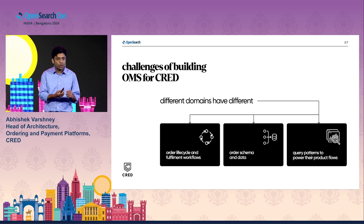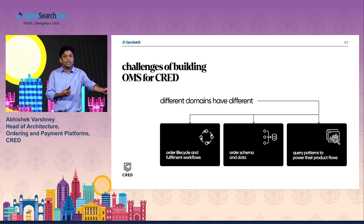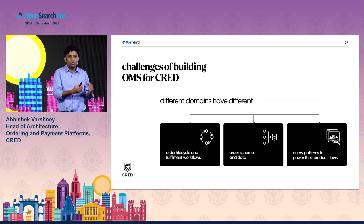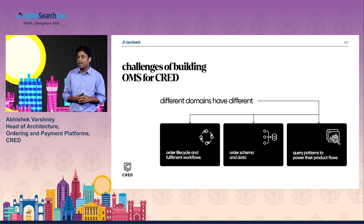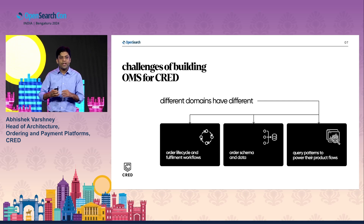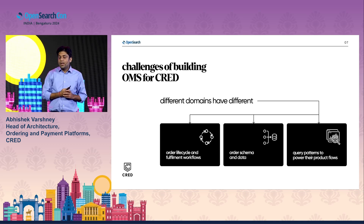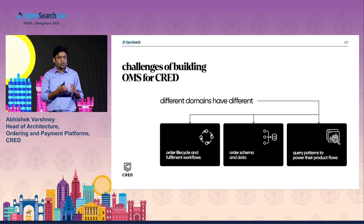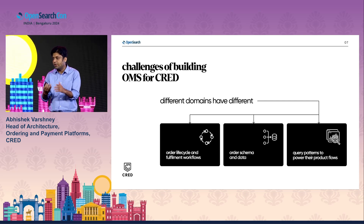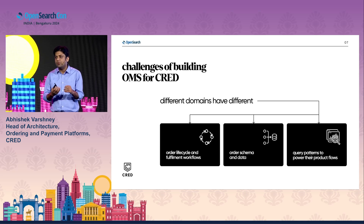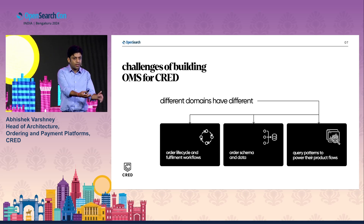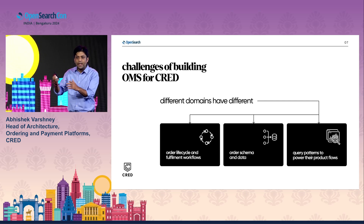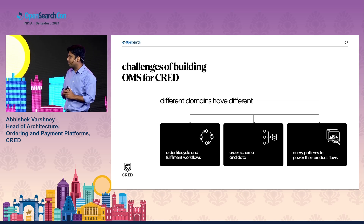For example, in case of an e-commerce order, it could be us intimating the seller first, and then once the seller approves, there is a physical delivery of the good that happens. But in case of a credit card bill payment, it could be a very different fulfillment workflow which happens completely online by talking to a different set of providers. The second problem was that these different offerings also have requirements for different information or different data they need to capture. For example, in a credit card bill payment, we need to capture which credit card you are making the payment against. But in case of an e-commerce order, it could be the SKU ID or the product ID.